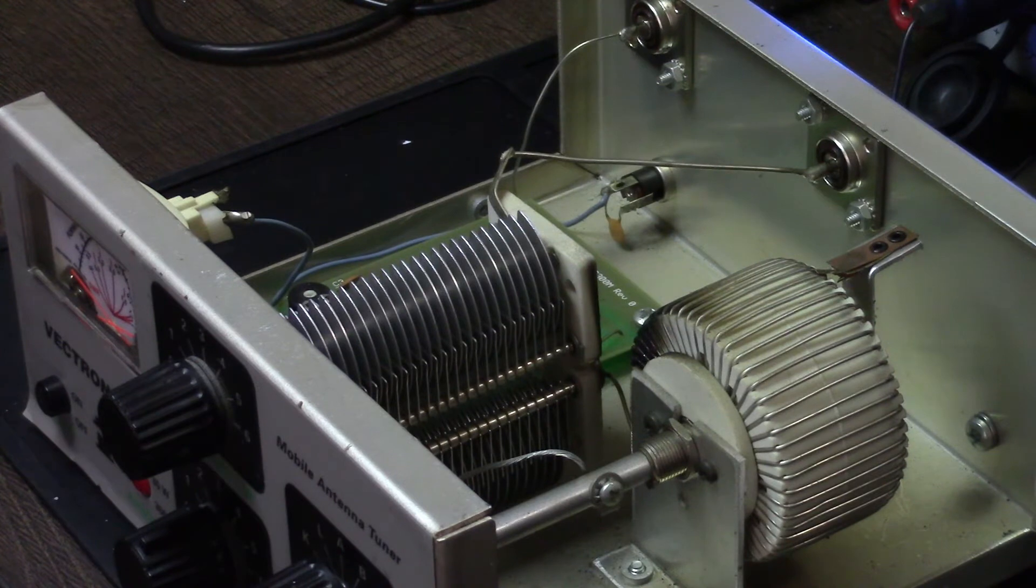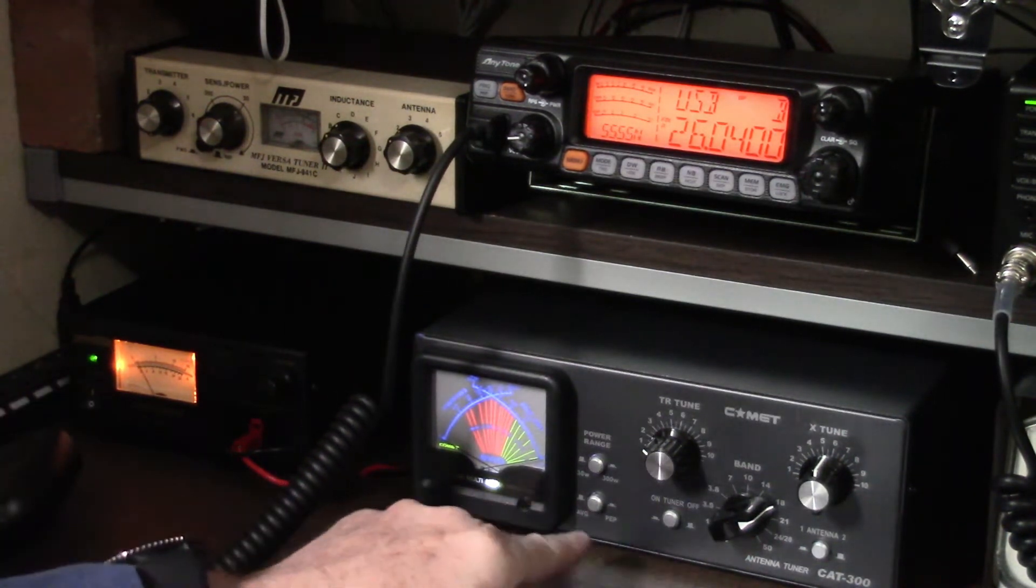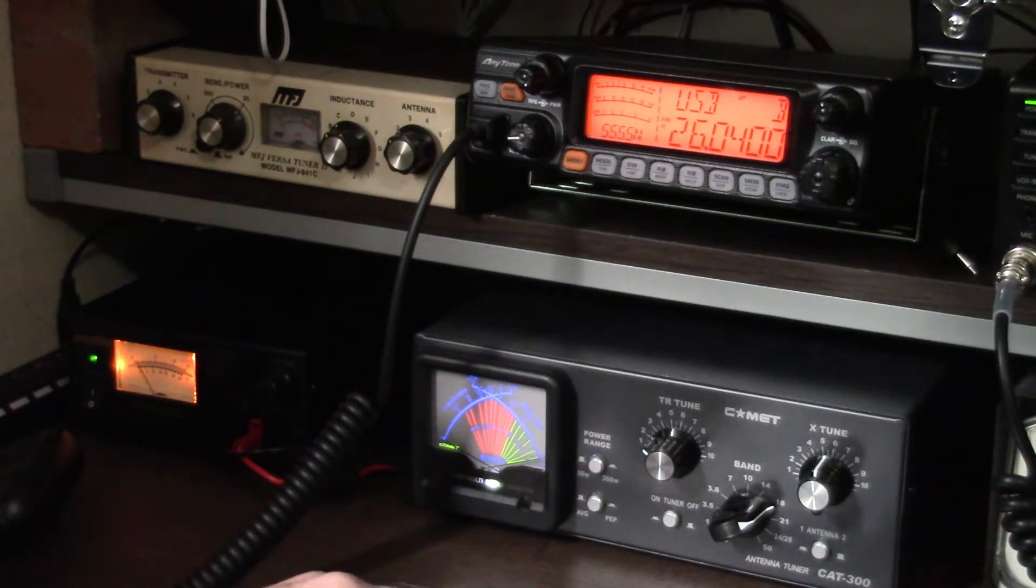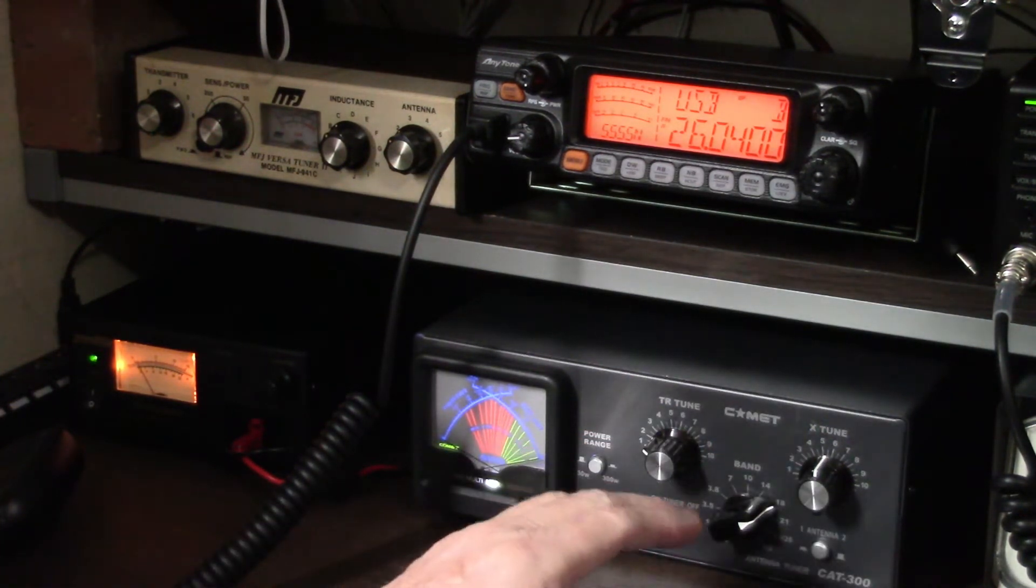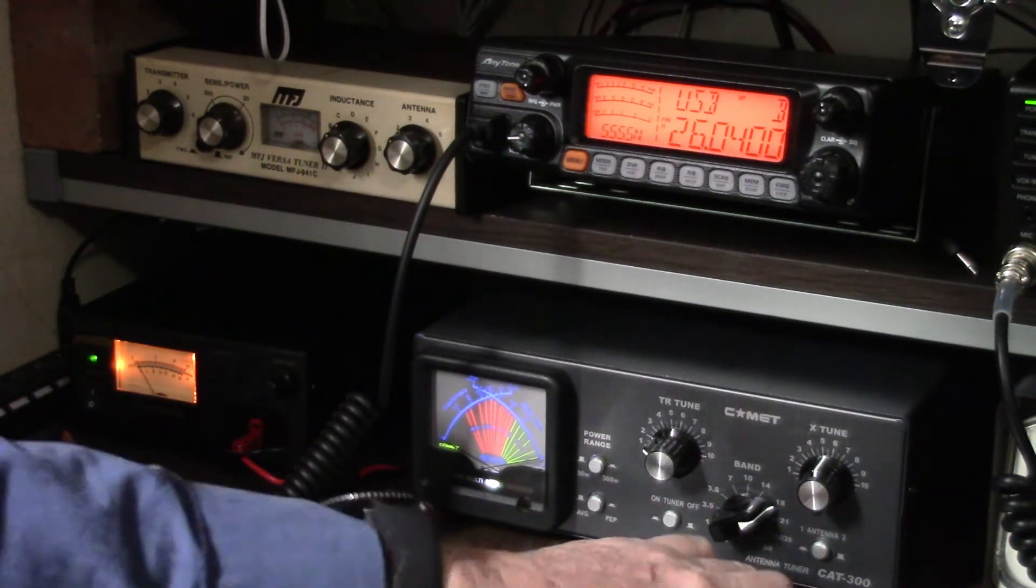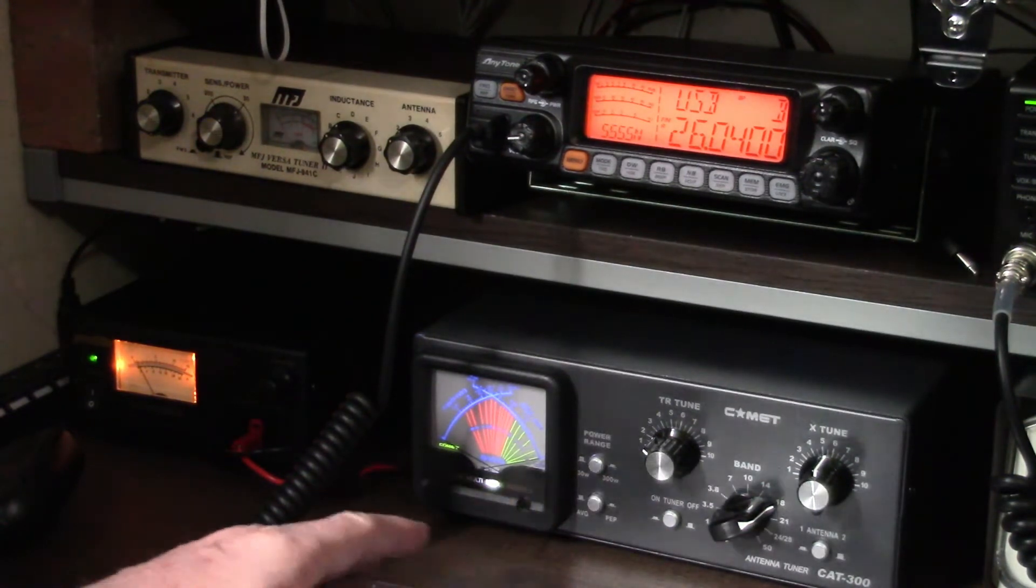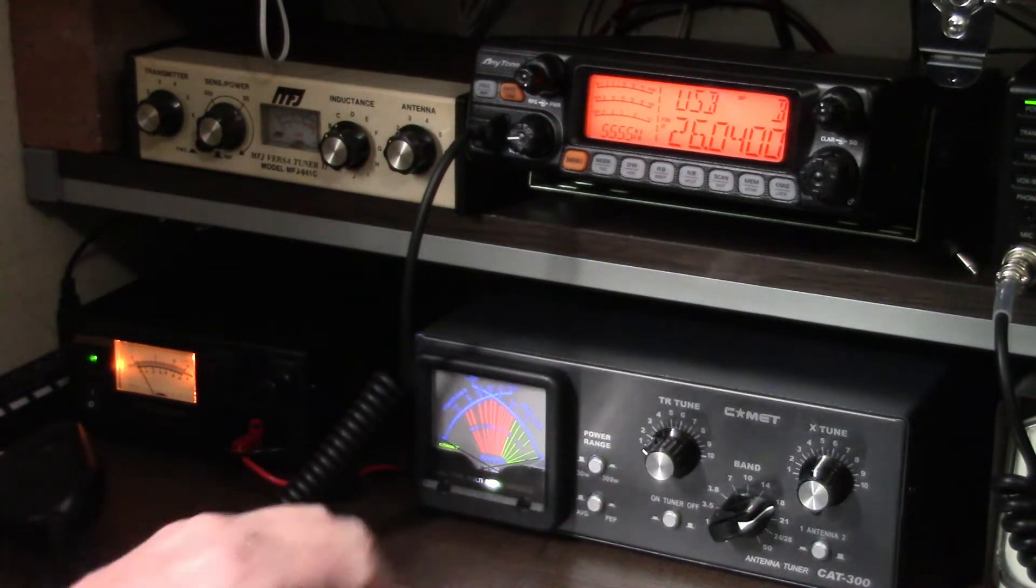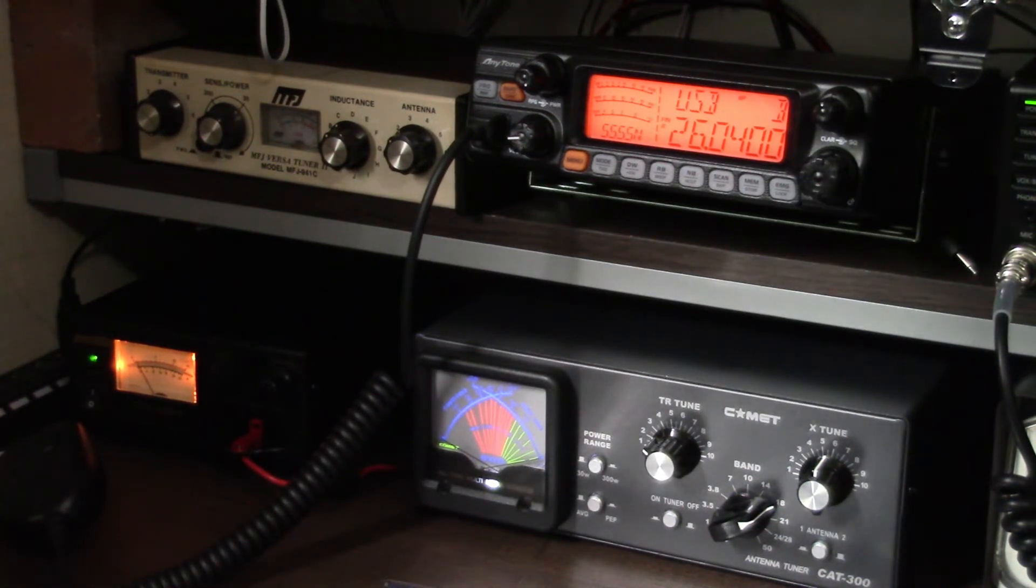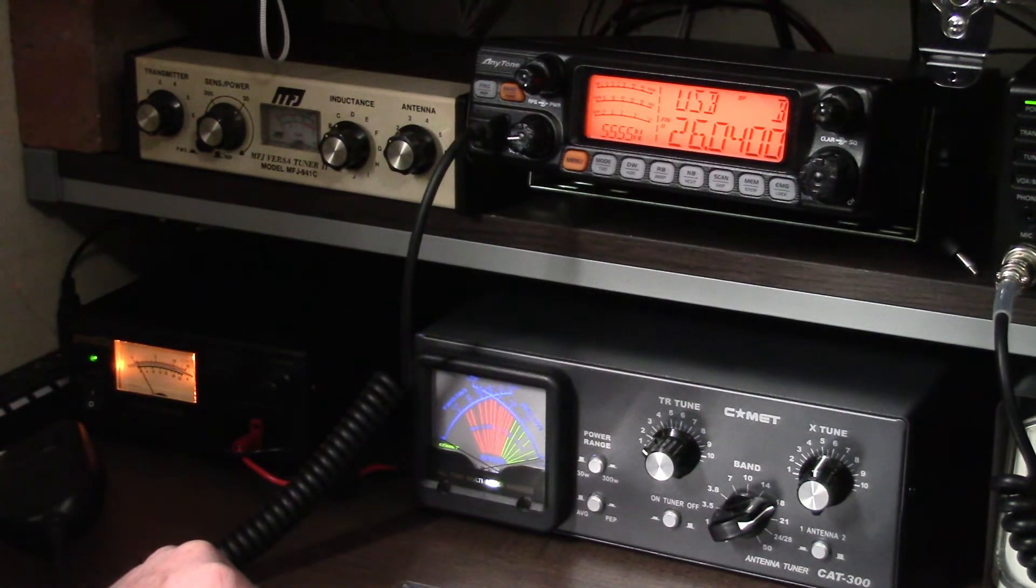Okay, now we've switched over the view here to the other two tuners I mentioned. First of all, this one right here - I love this tuner, this is really well made. It's a Comet, they're made in Japan. The model is the CAT-300, so Comet Antenna Tuner, CAT-300. This is a manual tuner and I love the meter on this thing. You can see it's lit up here, multicolored meter, makes it very easy to see the readings on there.